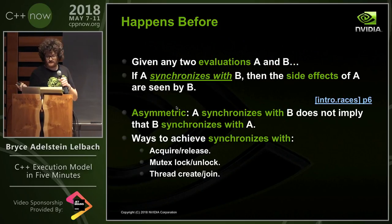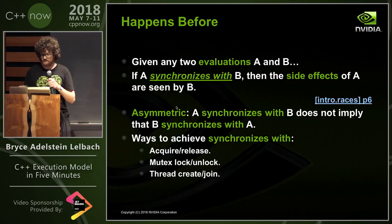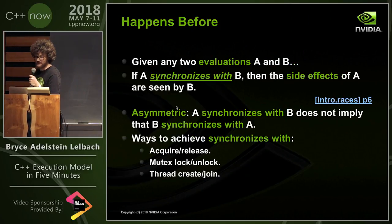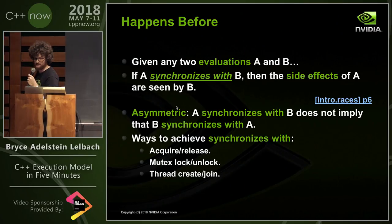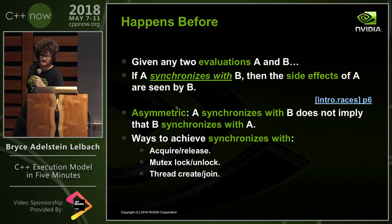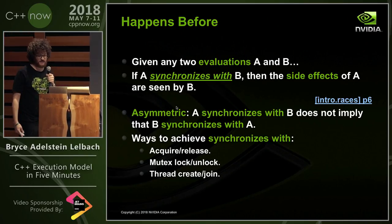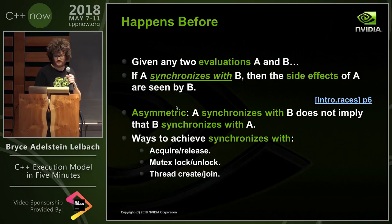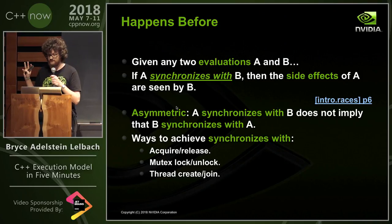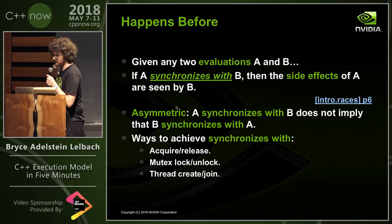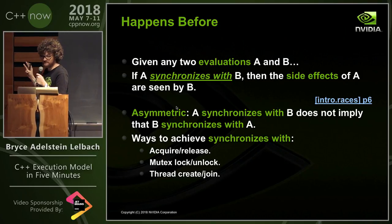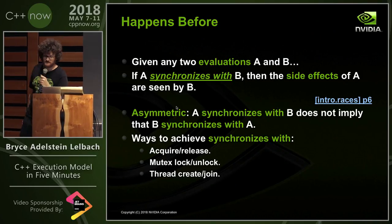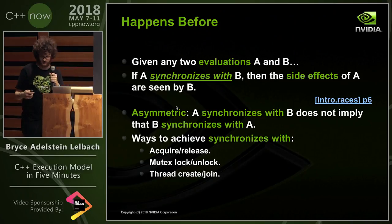Given any two evaluations A and B, if A synchronizes with B, then the side effects of A are seen by B. This is asymmetric — A synchronizes with B does not imply that B synchronizes with A. There are three ways to achieve this: atomic acquire-release semantics, mutex lock and join semantics, and thread creation and joining.